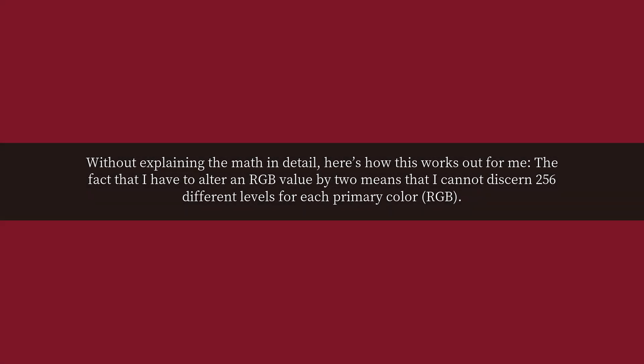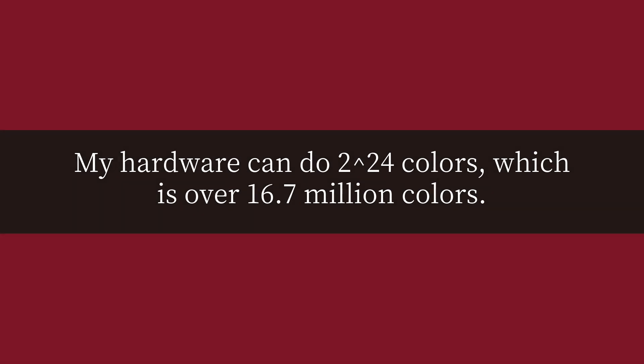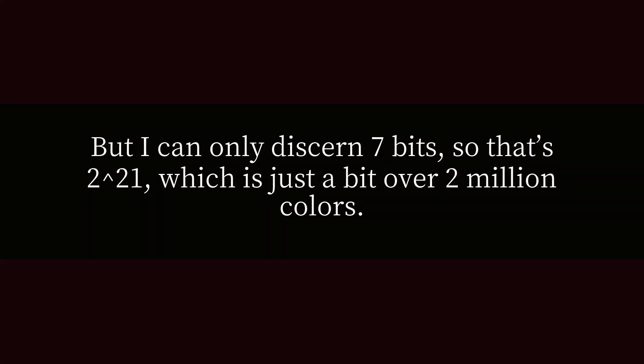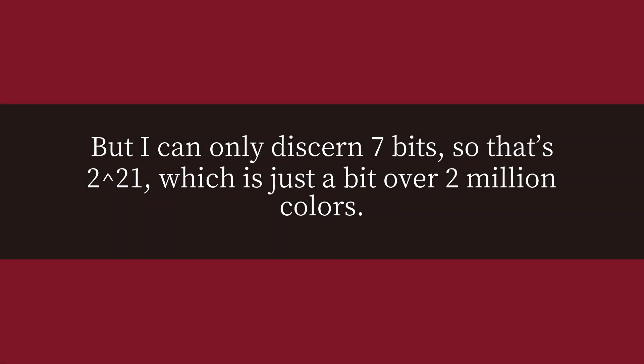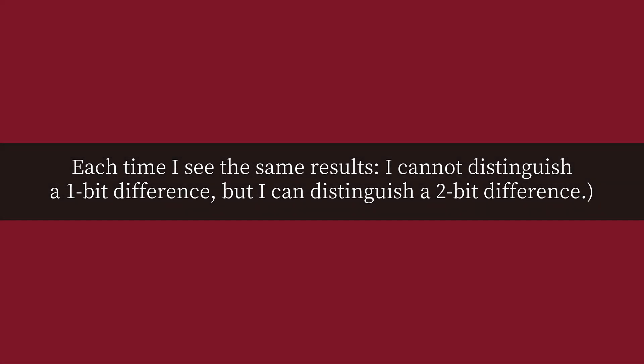Without explaining the math and details, here's how this works out for me. The fact that I have to alter an RGB value by 2 means I cannot discern 256 different levels for each primary color. My hardware can do 2 to the power of 24 colors, which is over 16.7 million colors. But I can only discern 7 bits, so that's 2 to the power of 21, which is just over 2 million colors. I conclude that my eyes can discern somewhere between 2 and 16 million colors under ideal circumstances. I've tried this on multiple computers using all kinds of different hardware — each time I see the same results: I cannot distinguish a 1-bit difference, but I can distinguish a 2-bit difference.